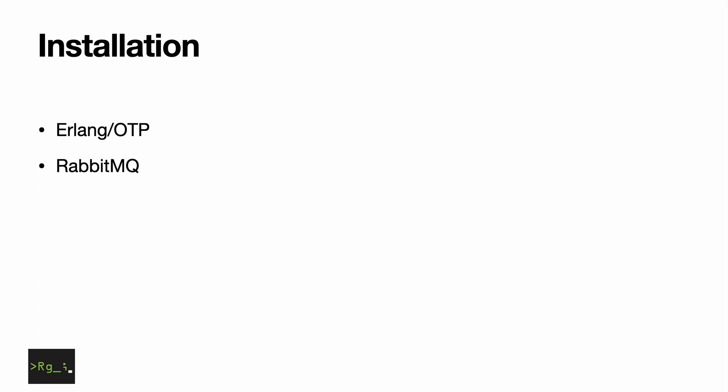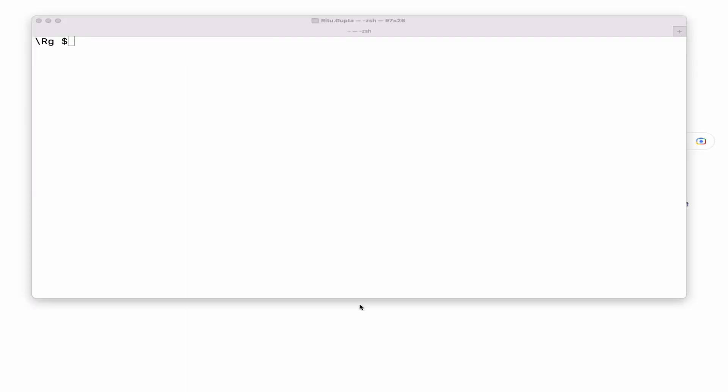For the installation of RabbitMQ we need two dependencies: the first is Erlang/OTP, which is a must-have dependency, and then RabbitMQ itself. I will show you the installation on Apple Silicon, but it will hold good for Intel Mac as well. For Windows you also need an Erlang dependency and RabbitMQ. So let's get started.